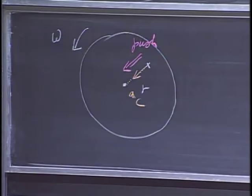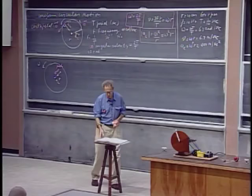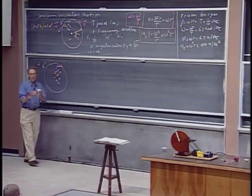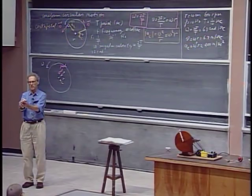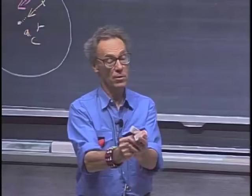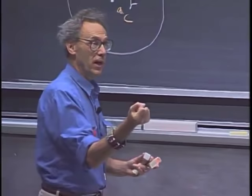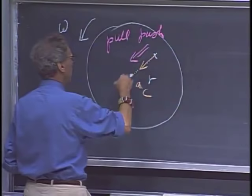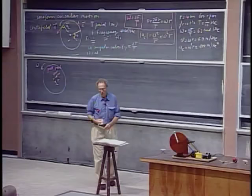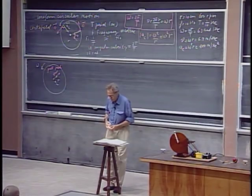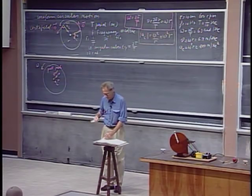That push is apparently necessary for the acceleration. Alternatively, suppose you had a stick in front of you — you're not sitting on a chair but you hold on to the stick. Now you can go around by holding on to it. The stick is pulling on you in the same direction toward the center. Whether it is a pull or a push, one of the two is necessary for you to go around in that circle at constant speed.